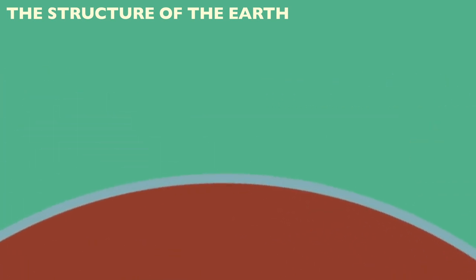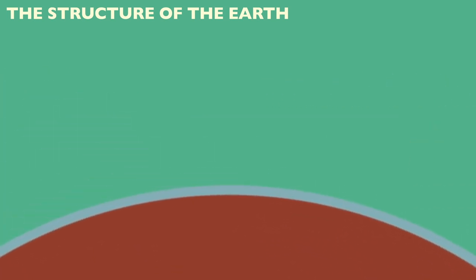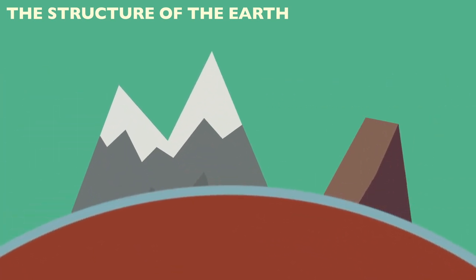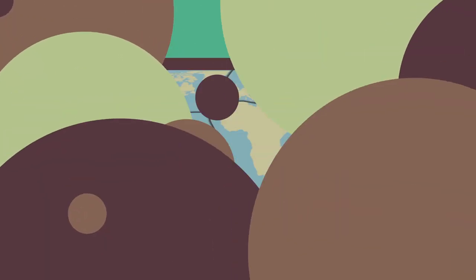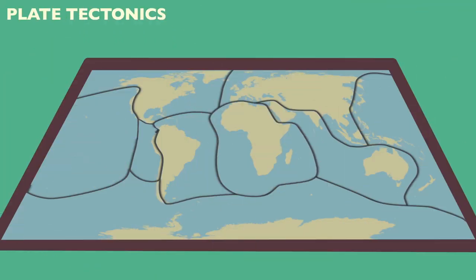Think of the Earth's crust as the skin of a tomato, not the peel of an orange. It is in the crust that our mountains and other features of our landscape are formed. The Earth's crust is not one smooth, unbroken covering — rather, it is made up of different sections called plates.